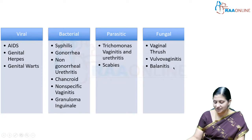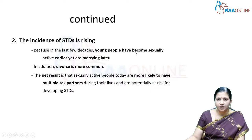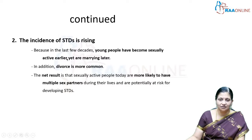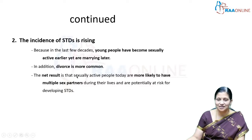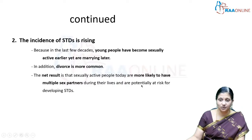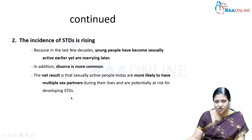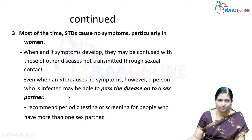The incidence of STIs is rising because in recent decades young people have become sexually active earlier, yet they are marrying later and divorce is more common. The result is that sexually active people are more likely to have multiple sexual partners during their lifetime and are therefore at greater risk of developing STIs.